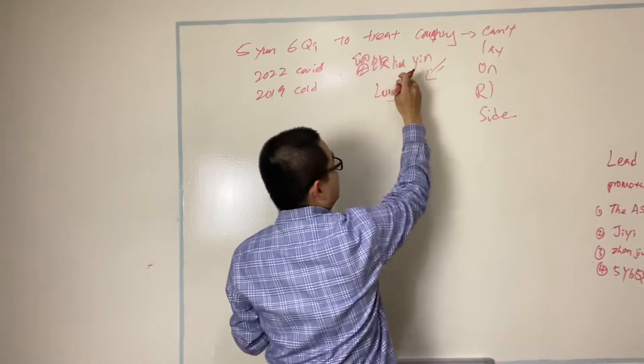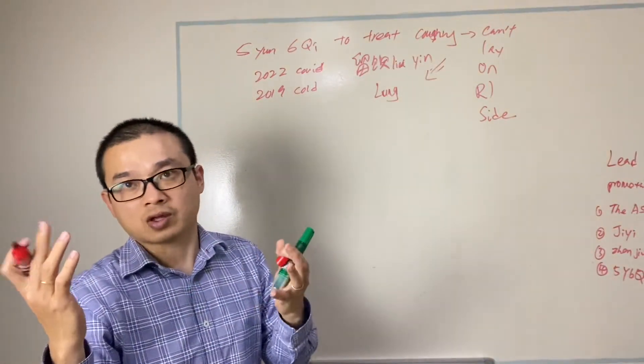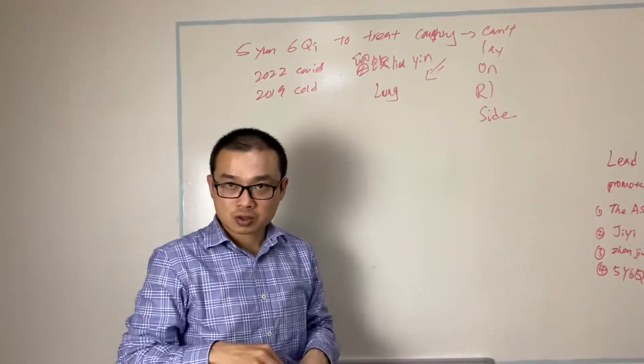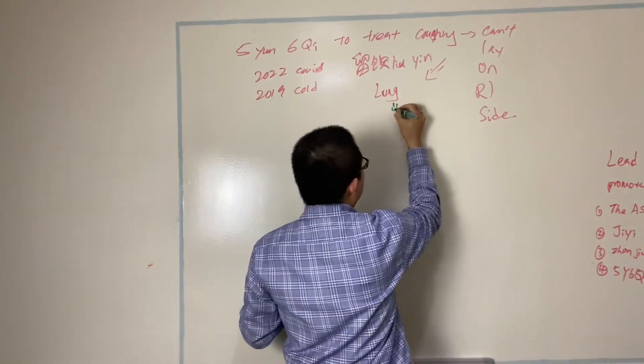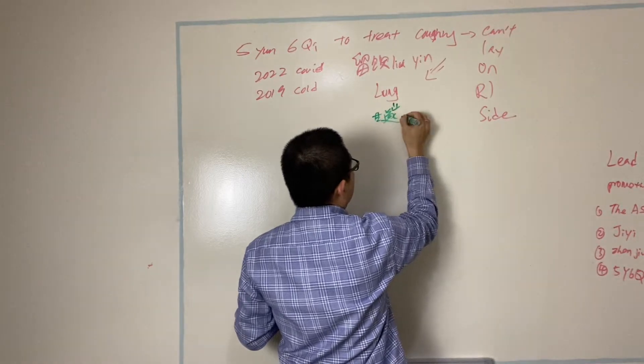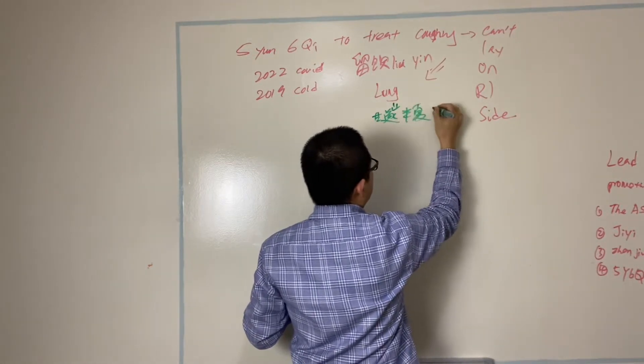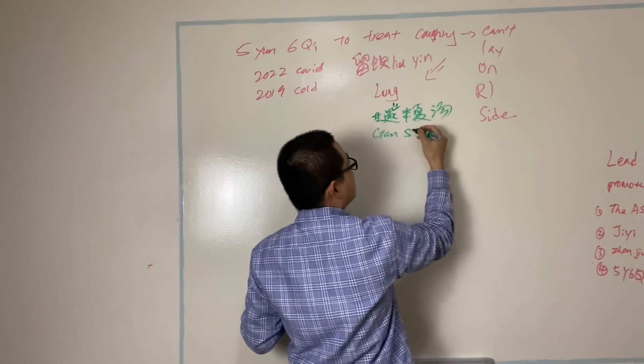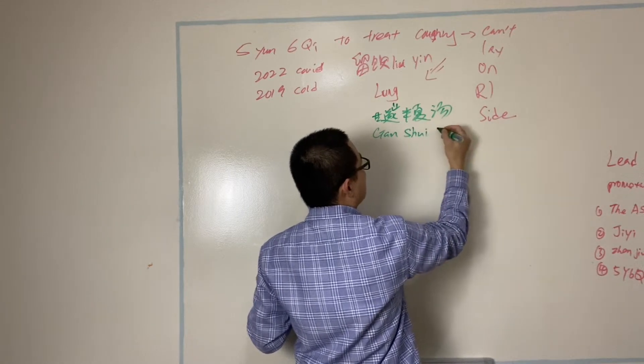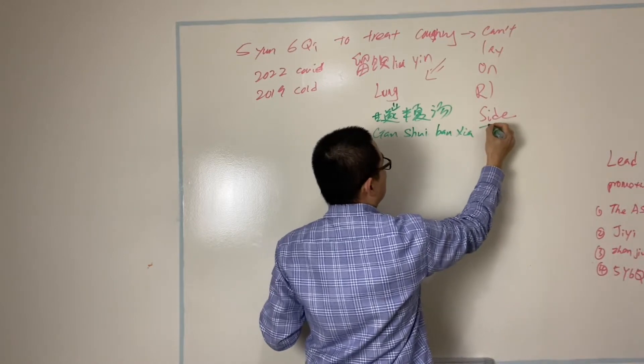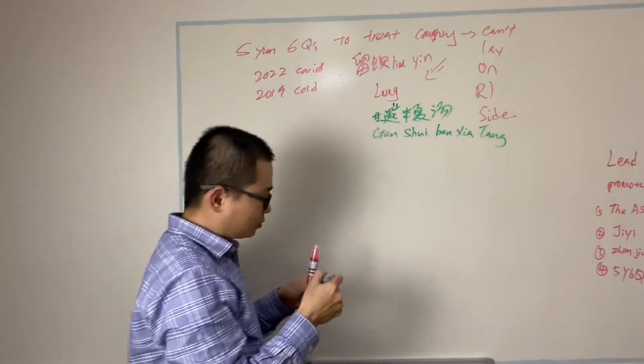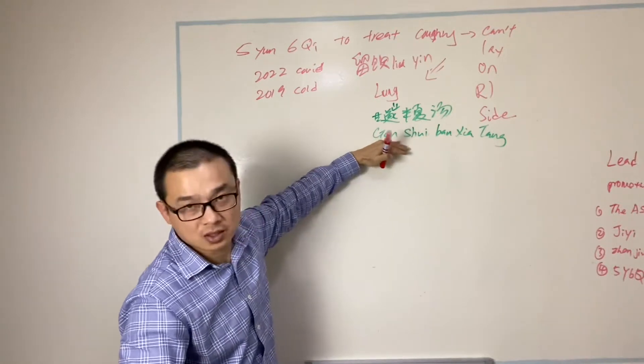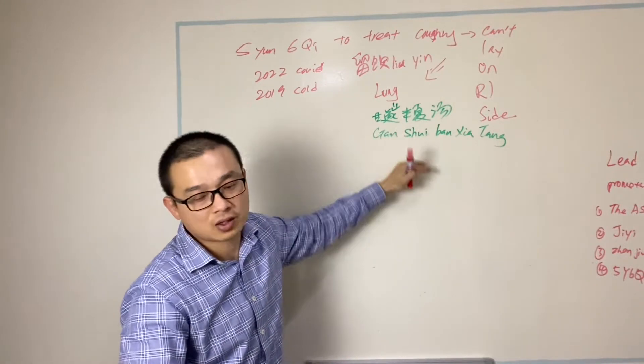Then when water remains in here, when you lay on there, it causes you coughing. It could be on the left side, but in this case it's actually on the right side. Then the formula to use on this one called Gan Sui Ban Xia Tang formula. In this case, I'm not using this one. I've seen a lot of case studies, but in this case I didn't use that formula at all.